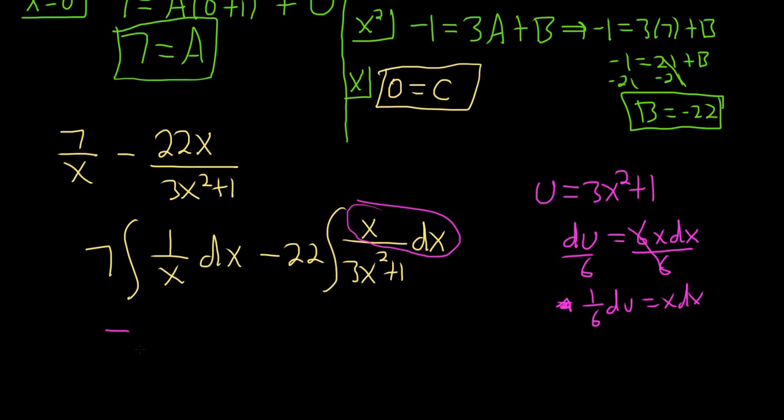We can go ahead and integrate this first one. It's just 7 natural log absolute value of x minus, and then pull out the 1/6. So it'll be minus 22 over 6. du over u. This x dx is 1/6 du. So this is 1/6 du. And so there's the 1/6 du. The 22 is there. And the bottom piece is just u.